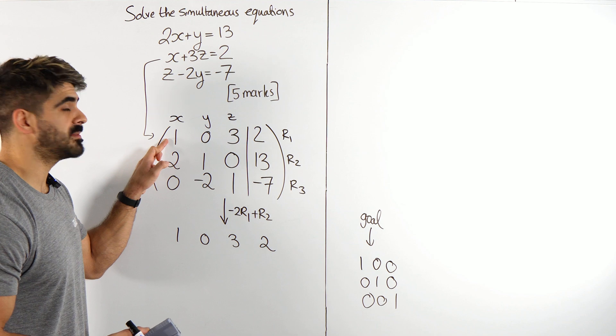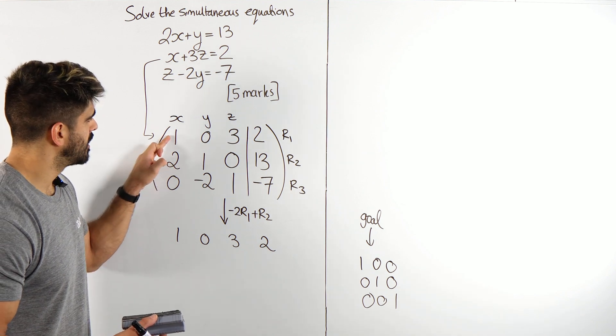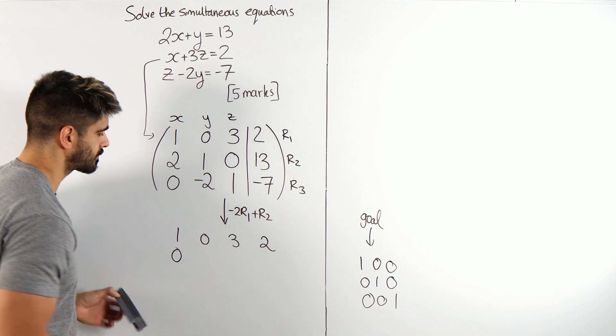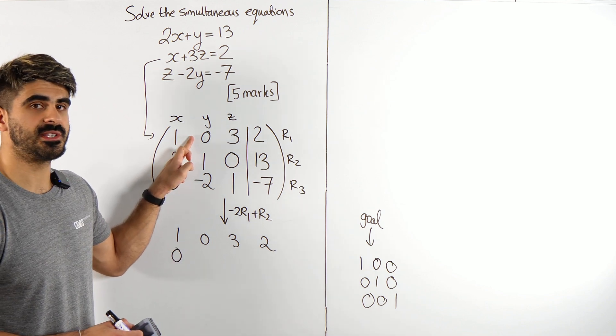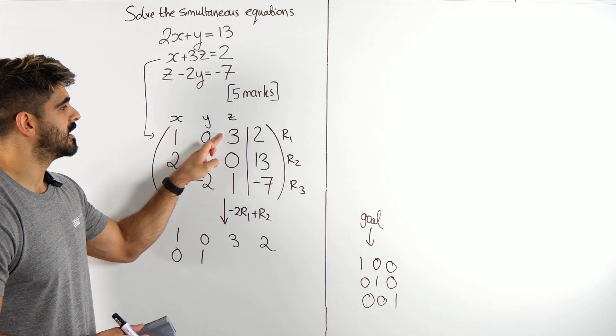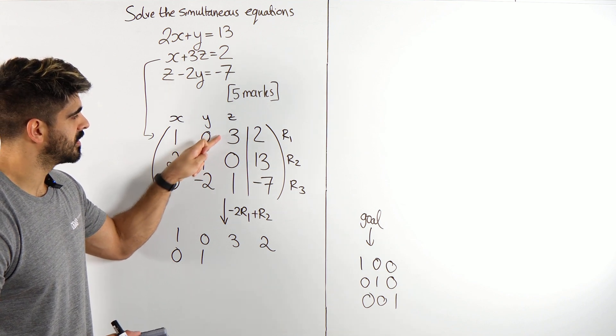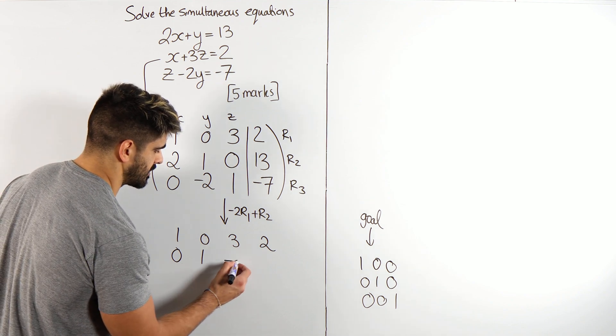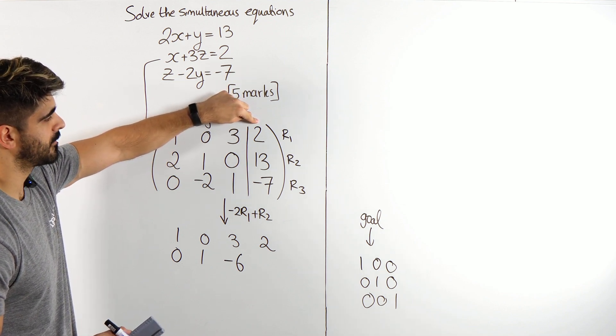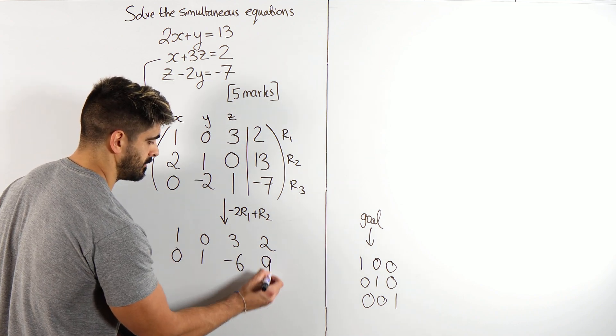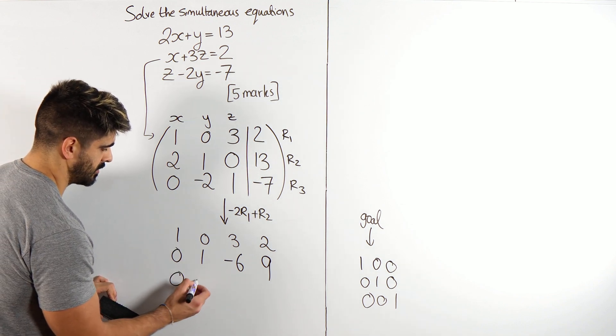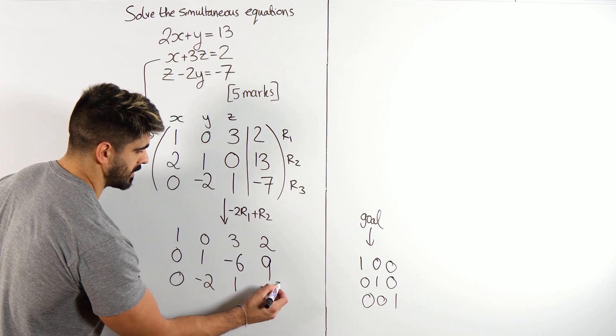Let's do it. I'm going to times these numbers by minus 2 and add it to this. 1 times minus 2 is minus 2, minus 2 plus 2, 0. 0 times minus 2 is 0, plus 1 is just 1. 3 times by minus 2 is minus 6, minus 6 plus 0 is minus 6. 2 times by minus 2 is minus 4, plus 13, 9. So that's that bit done. Then we have 0, minus 2, 1, minus 7.